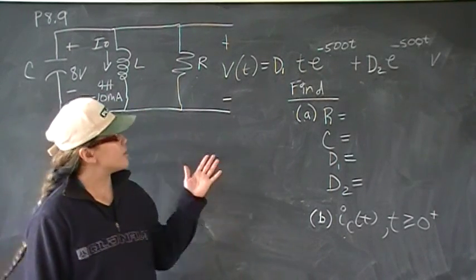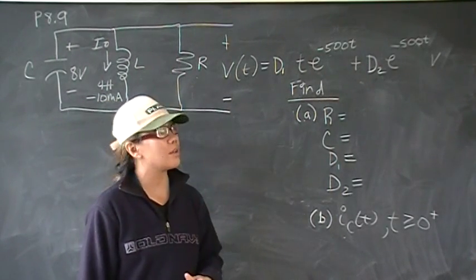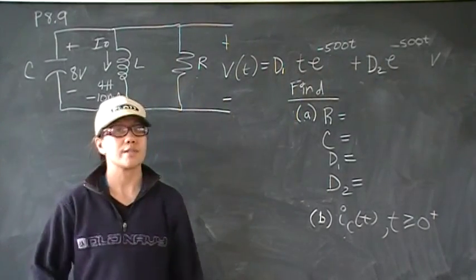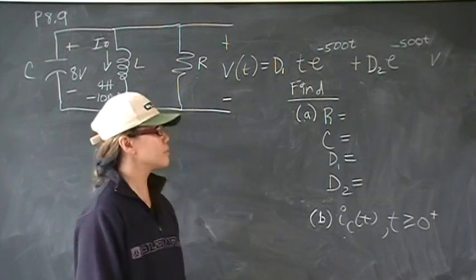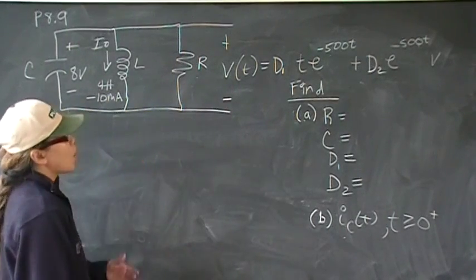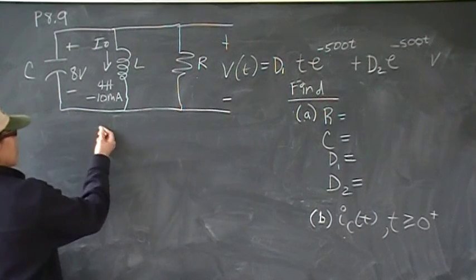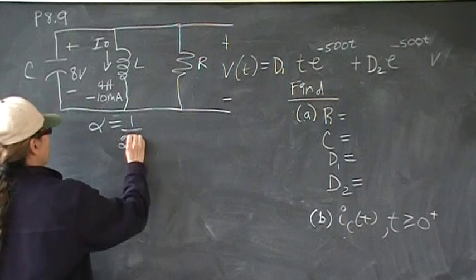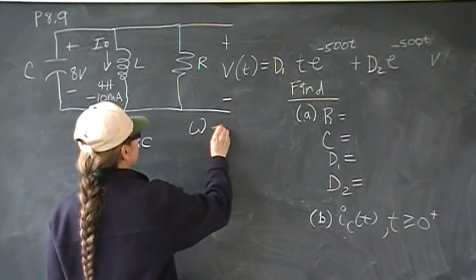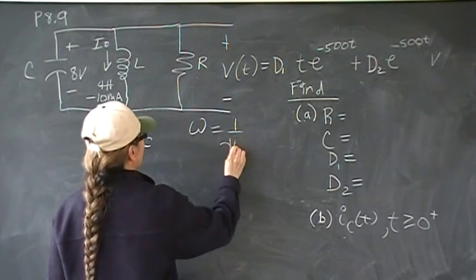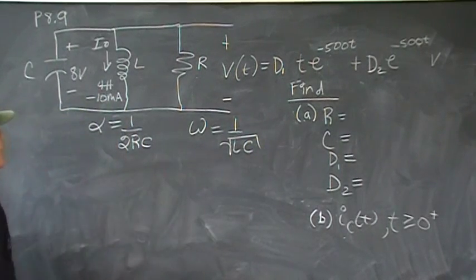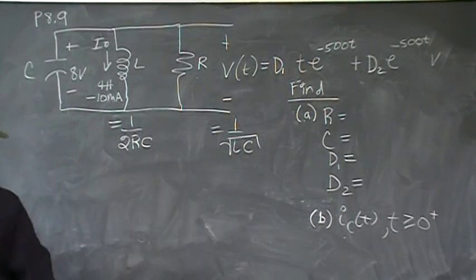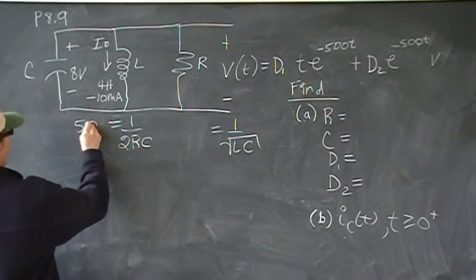Because of the t times the e in the first phrase of the general equation, and because the alphas and the alpha and omega nought are equal, which is the condition for a critically damped response. Remember, with the overdamped response, the s1 and the s2 are different because alpha and omega nought are not equal to each other.